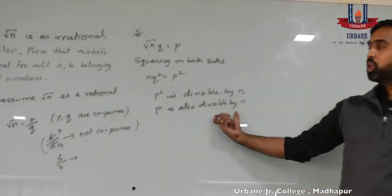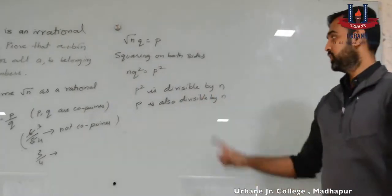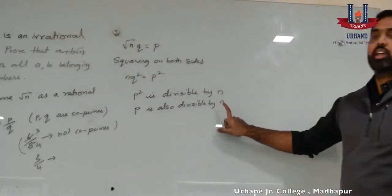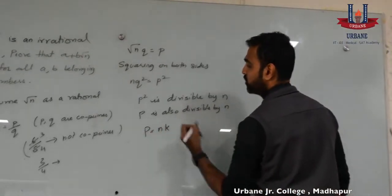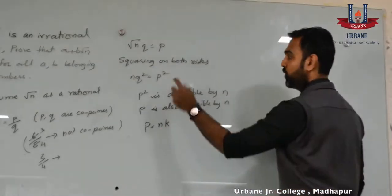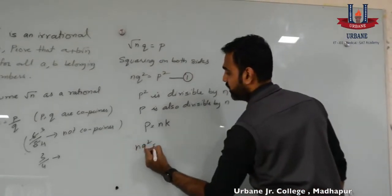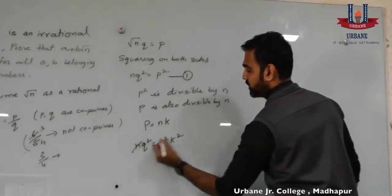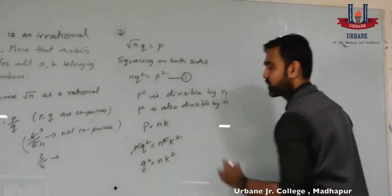And this statement is true if n is a prime number. So, we have p having a factor n. Now, let us consider p is equal to n into some value k. Substituting p is equal to n into k in equation 1, we get n q squared is equal to n squared k squared. Cancelling n, we get q squared is equal to n into k squared.